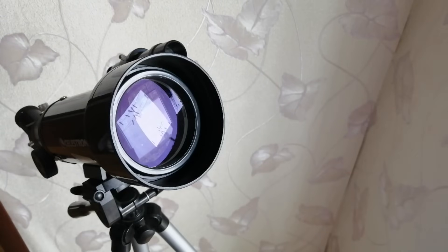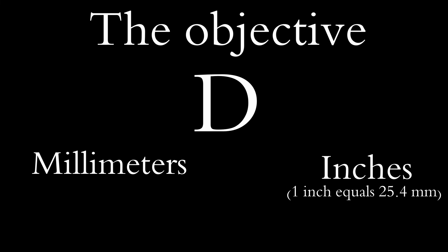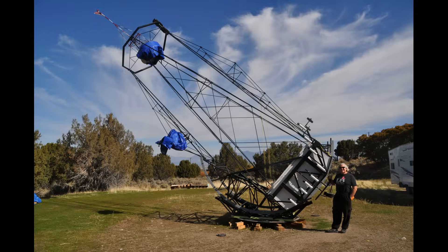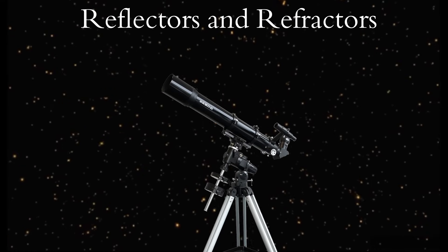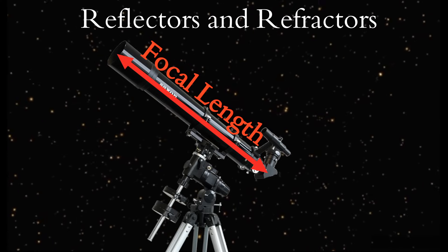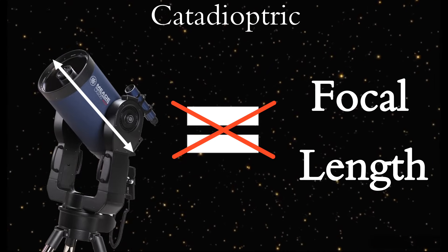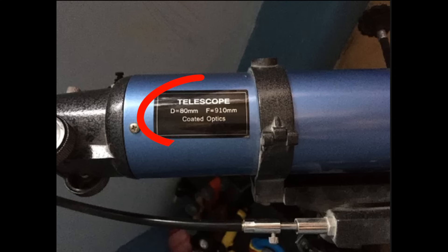Now we should find out two main characteristics. The first one is the aperture — the diameter of the light-gathering lens or mirror, often called the objective. The aperture's diameter, or just d, is expressed either in millimeters or, less commonly, in inches. The larger the aperture, the more light the telescope can collect and the more objects you can see. The second characteristic is the objective's focal length. For refractors and reflectors, the focal length is equal to the length of the tube. For a catadioptric telescope, it is normal that the tube length is not equal to the focal length. Both characteristics are written on the tube of your telescope.